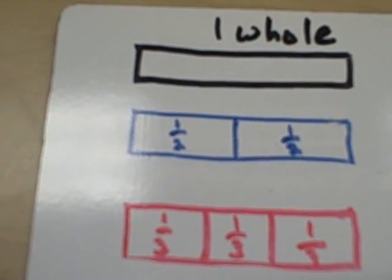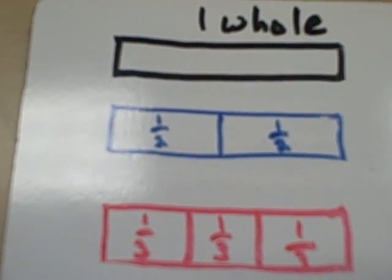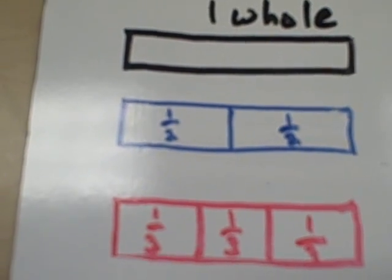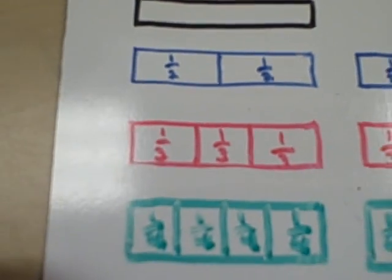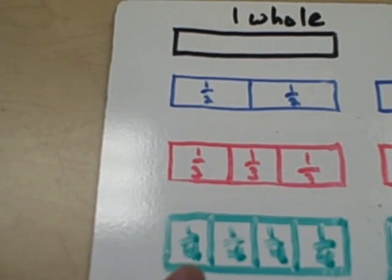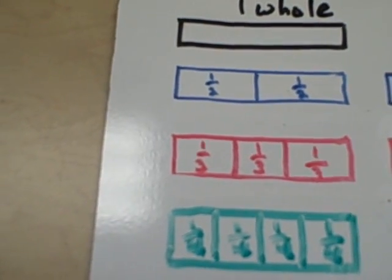This is another whole, but this time it's broken up into three parts to make the whole, or three thirds. And finally, this is another whole, and it takes four parts to make up the whole, or four fourths.